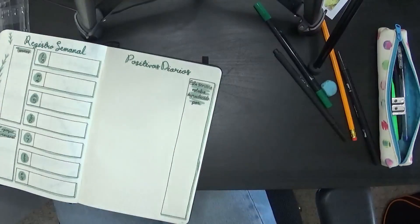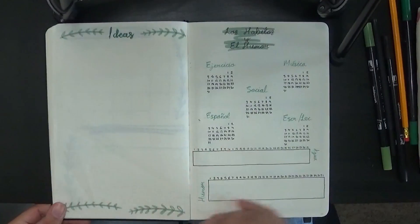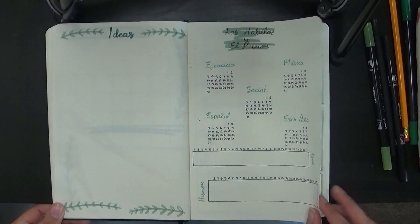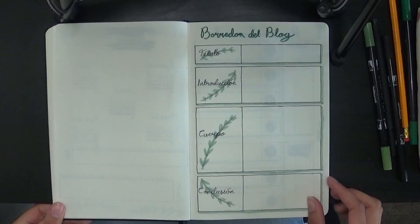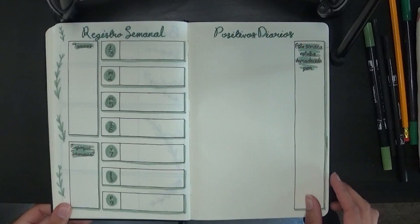So here is my final flip through of my bullet journal setup for May. I really like how this turned out, it was very calming to do which is exactly what I needed. And I'm looking forward to using it throughout the month. So that is my bullet journal setup for May, not my most perfect setup, I did make a couple of mistakes.